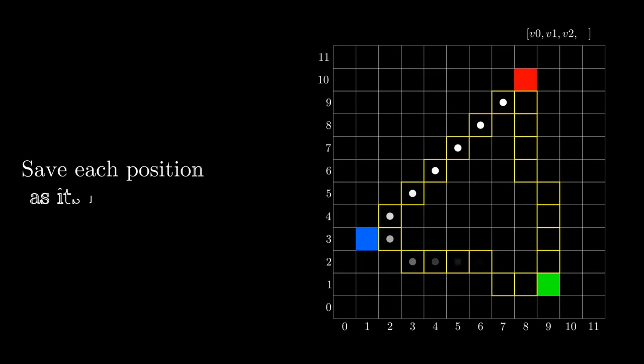For each highlighted pixel, we can return its position and save it as a new vertex. But before we draw them on the screen, we need to know which color each pixel will receive.